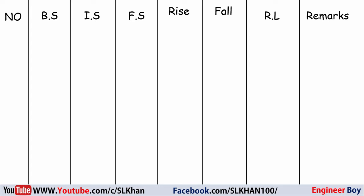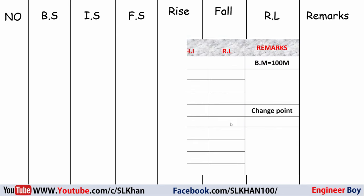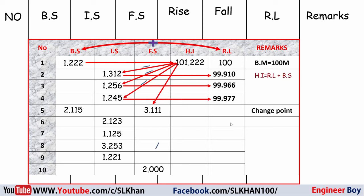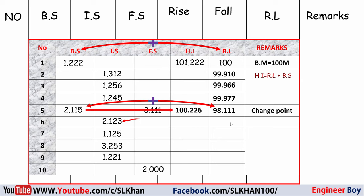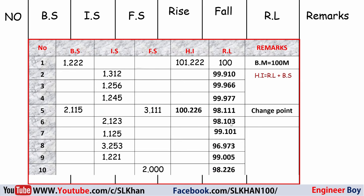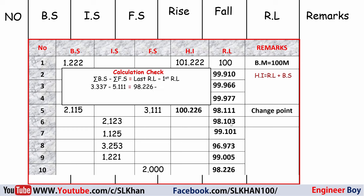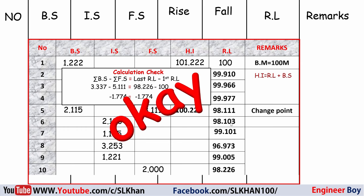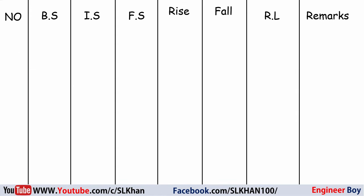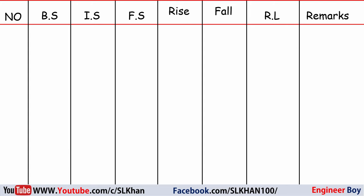When you get the data — the staff reading at each point — we need to determine the reduced level (RL) of those points. Previously on Engineer Boy I uploaded a separate video on the HI table, or height of instrument table. That is the same approach to determine the reduced level at each point, but in this video we're going to use the Rise and Fall table.